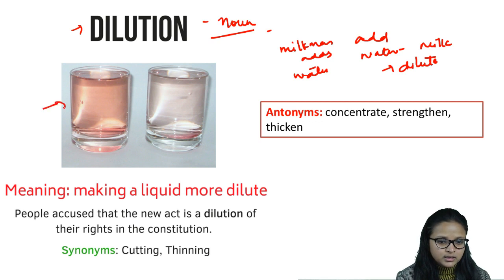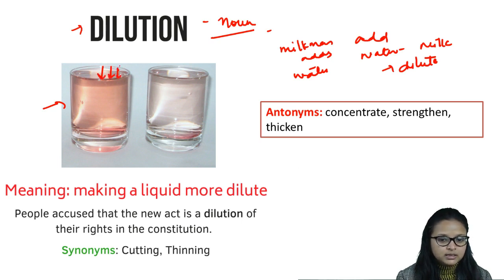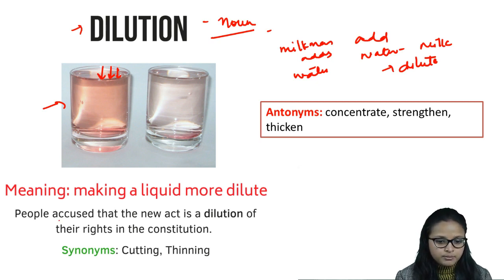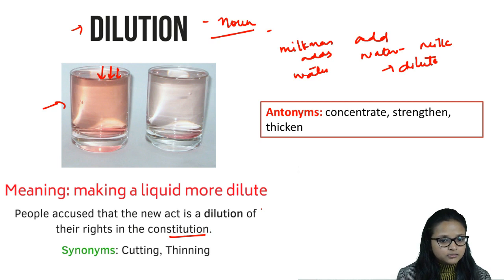Here you see a glass of water with a copper color in it, but when we add more water, the color changes because the thickness is reduced — that is called dilution. Example sentence: 'People accuse that the new act is a dilution of the rights in the constitution.' Dilution means making something thin or less strong.